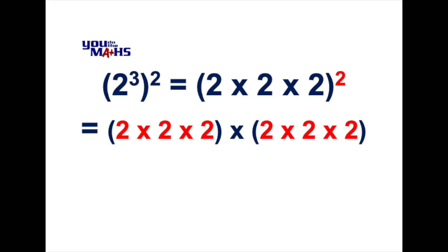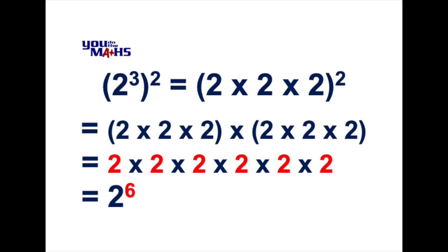Now when we do that we can see that all together we're multiplying out 6 twos. And so there's a similar way to write that: if we're multiplying 2 out 6 times we can write that as 2 to the 6. We can see in red that there are 6 twos being multiplied.